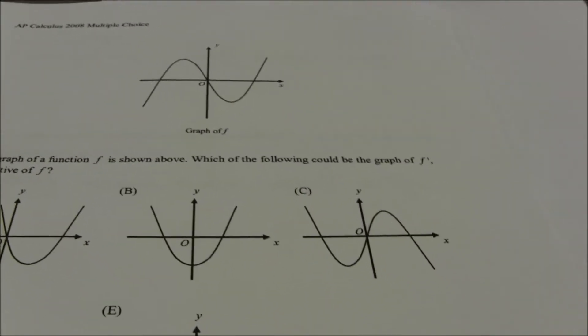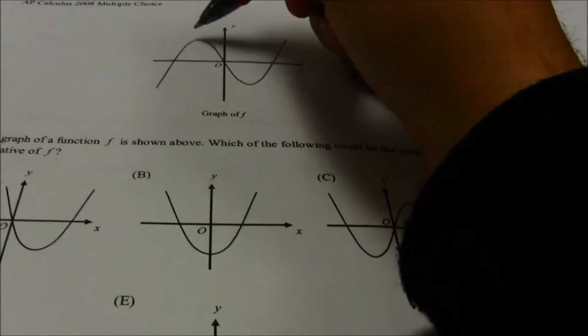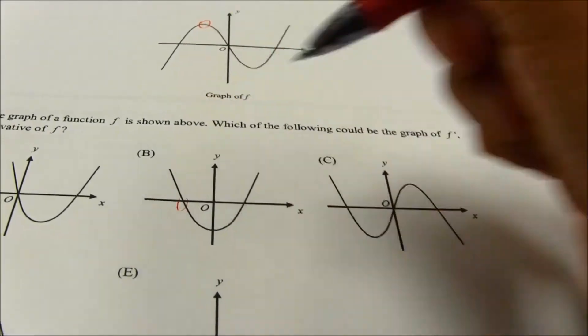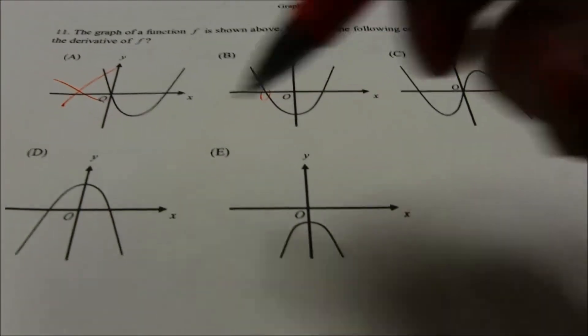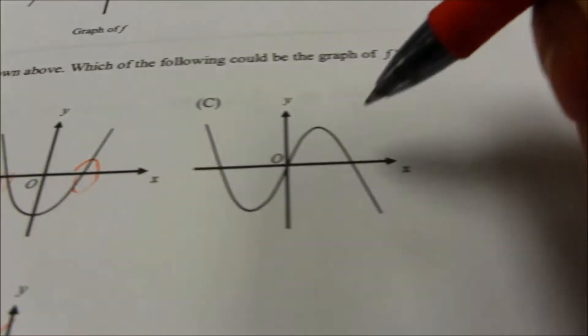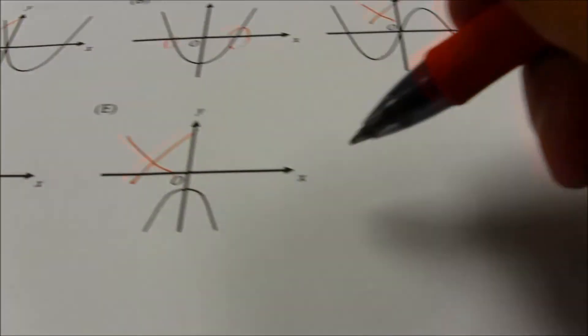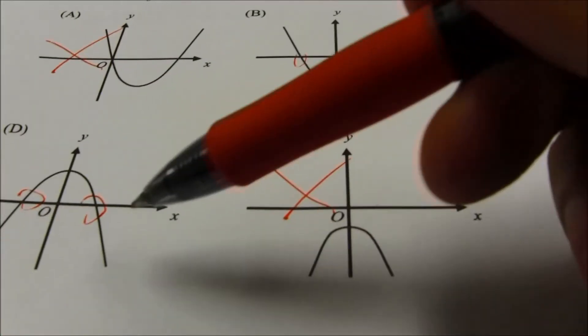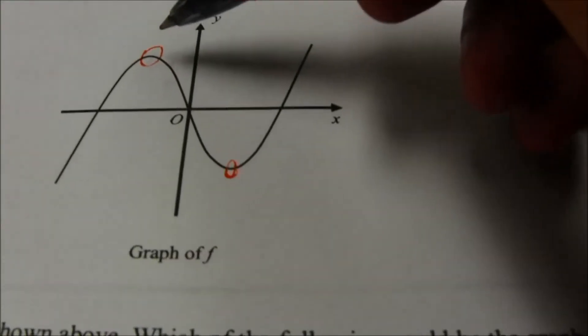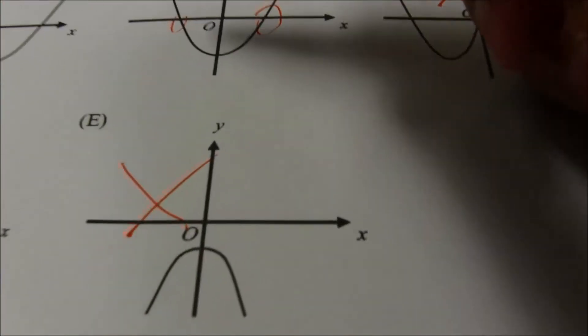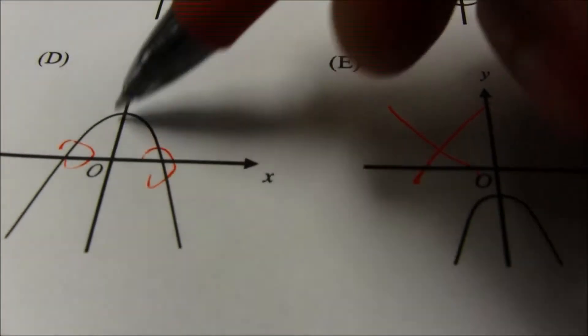Number 11: I have a graph of a function and want to graph its derivative. The derivative graphs slopes, so I look for where slopes are zero. There's a zero slope at one point — I'm looking for a function with a zero there. Checking the choices: some don't have zeros in the right places, so those are out. The original function is third degree with three places where slope is zero. Looking at signs of derivatives: there's a negative slope in one region giving negative derivative values, and positive slope in another. The answer is B.